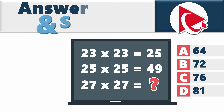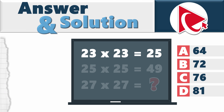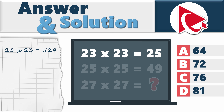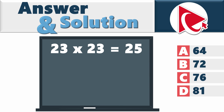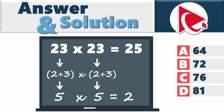Did I warn you that this expression is slippery? In the typical world, 23 multiplied by 23 equals 529. But to solve this problem, we need to think out of the box. Instead of using traditional math, you need to sum up the digits and multiply the result of the sum operation. For example, 23 by 23 would be (2+3) multiplied by (2+3), which is 5 multiplied by 5, and the result would be 25.